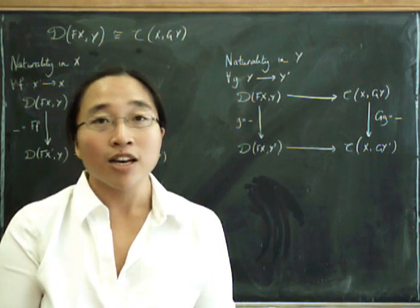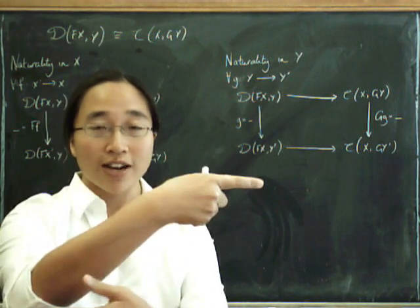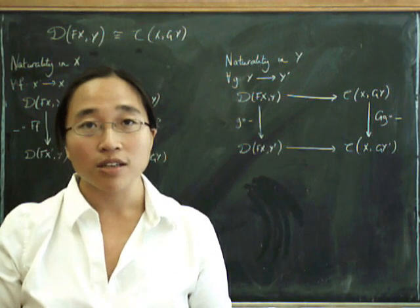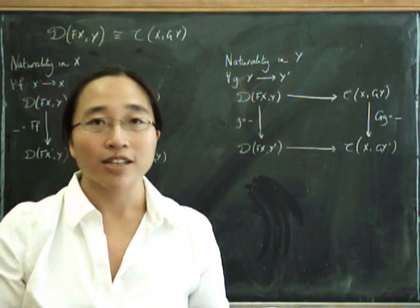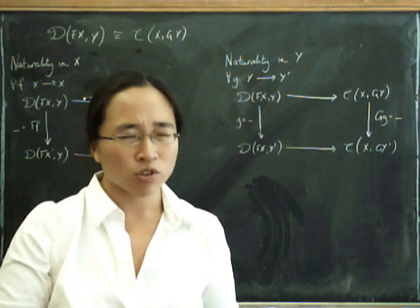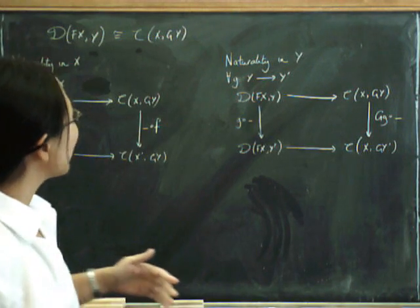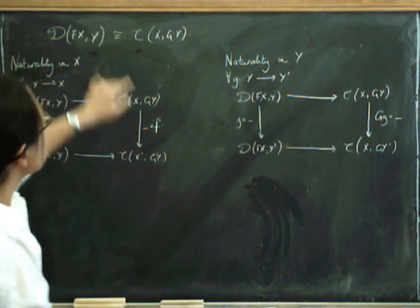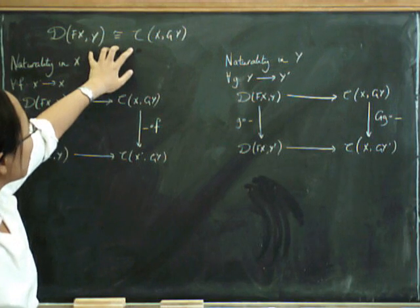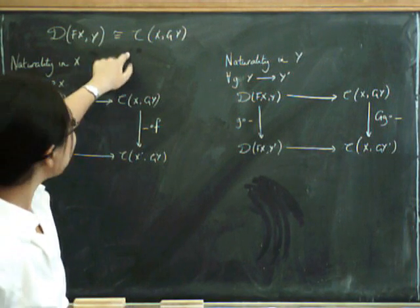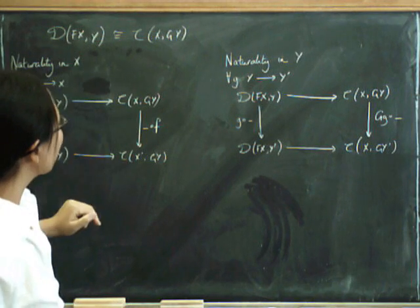So remember, in adjunctions 1, we said that an adjunction was given by a pair of functors going in opposite directions, a pair of natural transformations eta and epsilon, satisfying the triangle identities. And in adjunctions 2, we said that it was a bijection between these homsets that was natural in both X and Y.